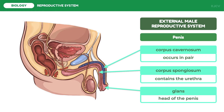The glans is covered by a loose layer of skin called the foreskin or prepuce. In some men this is removed by a procedure called circumcision. If left uncircumcised, the risk of getting urinary tract infection is increased due to the buildup of smegma, which is a cheese-like sebaceous secretion in the folds of the skin that allows the growth of harmless bacteria causing a certain odor.